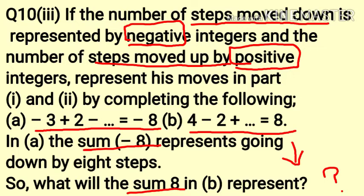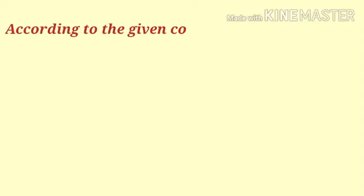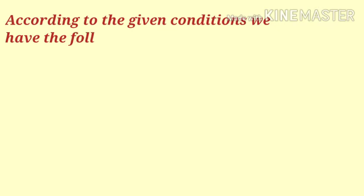In part A, the sum minus 8 represents going down by 8 steps. So what will the sum 8 in part B represent? According to the given conditions, we have the following tables.